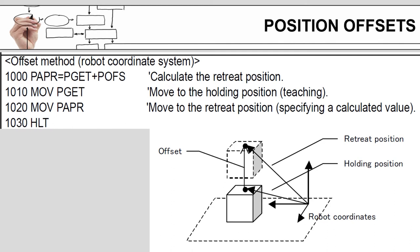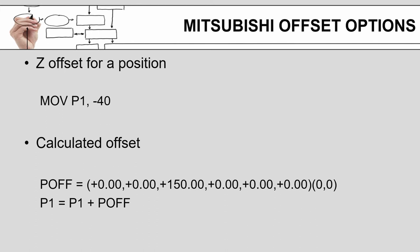Mitsubishi, on the other hand, allows you to define an offset variable and then apply that via math to an existing position. Mitsubishi also offers a parameter to the move command that will tell the robot to move to that position, but with a global Z offset of a programmer specified value. And then, like I said earlier, you can also do a fully calculated offset on the Mitsubishi.